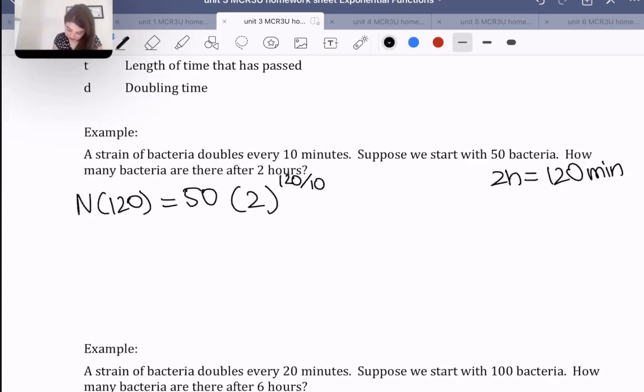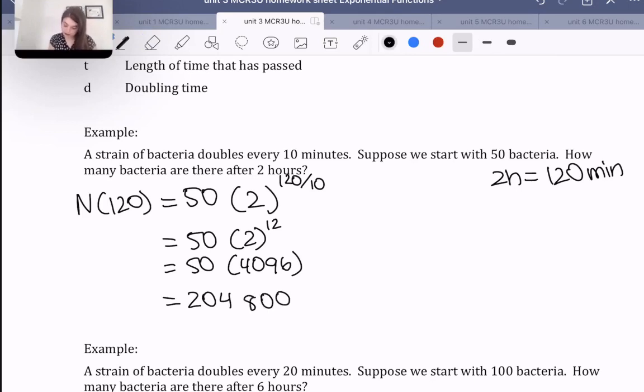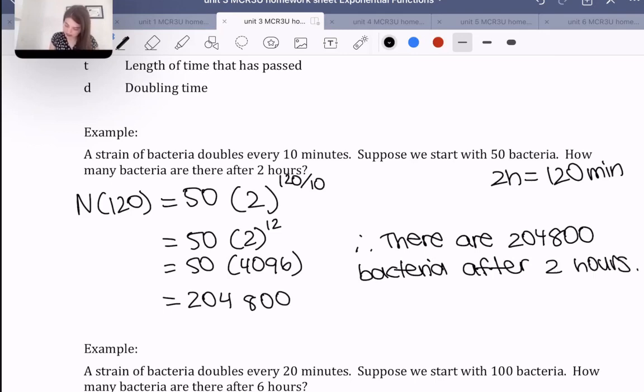Now let's solve this. This is equal to 50 times 2 to the power of 12. Let's figure this out. What is 2 to the power of 12? 2 to the power of 12 is 4096. So that's 50 times 4096, which is 204,800. Therefore, there are 204,800 bacteria after 2 hours or 120 minutes.